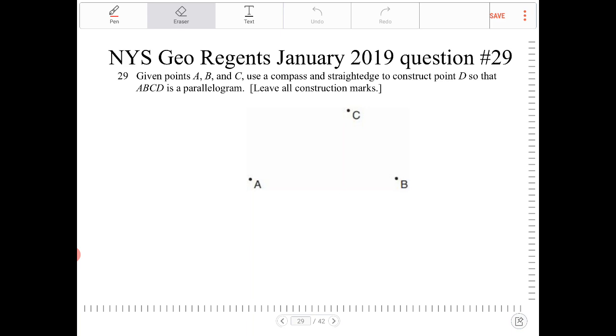But looking at this, it looks like they want us to position point D in a counterclockwise orientation. Because if you look at this right now, ABC is drawn in a counterclockwise rotation. So that means D would have to be located over here somewhere.